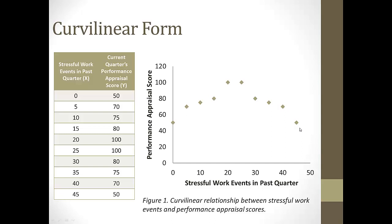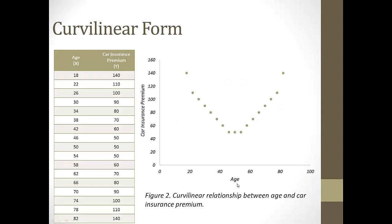I'm not going to have you actually create scatter plots for this assignment, but I do want you to visualize what your data probably looks like based on the correlation coefficients you're going to be calculating with Excel. This is also a curvilinear relationship — whereas the first was an inverted U, this one is a U shape. Each dot represents one person's age and car insurance premium. There's a sweet spot in the middle, around age 40 to 60, where your car insurance premium is lowest.